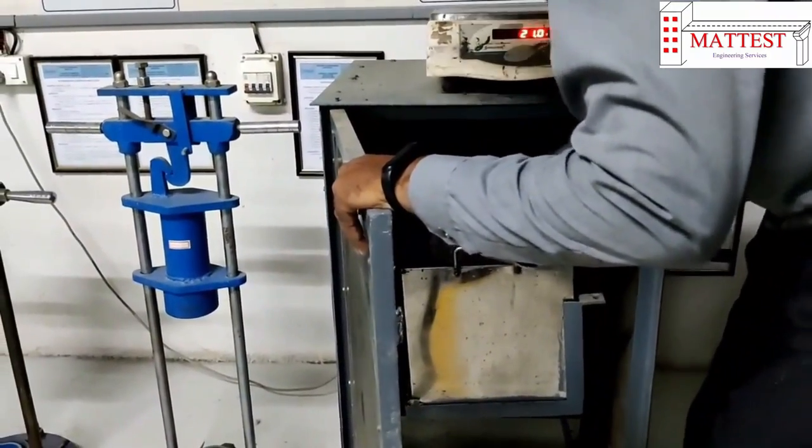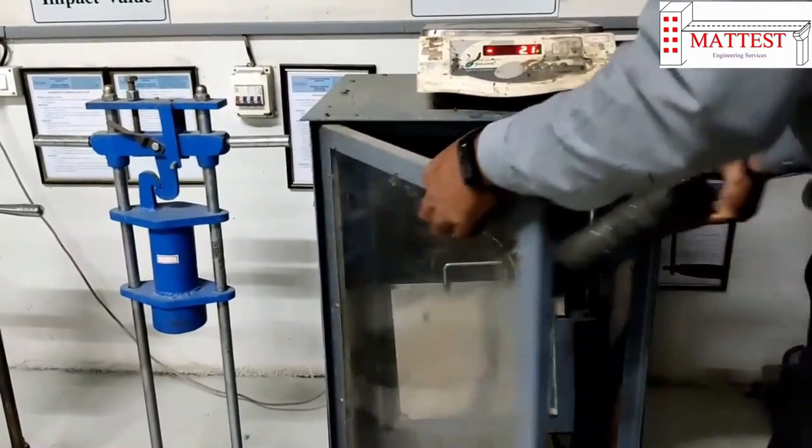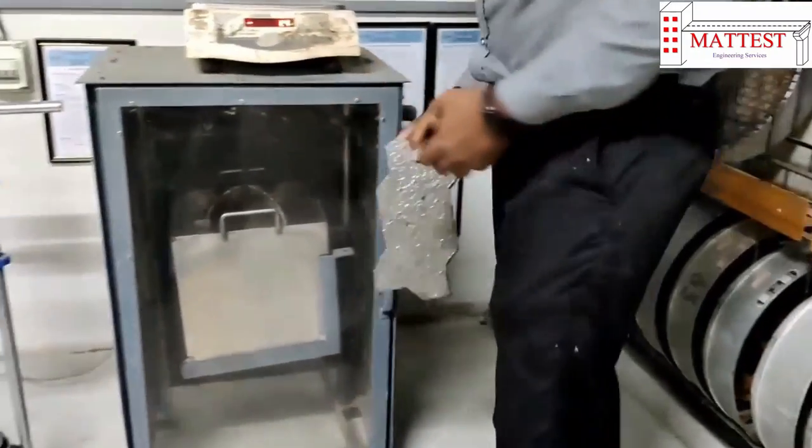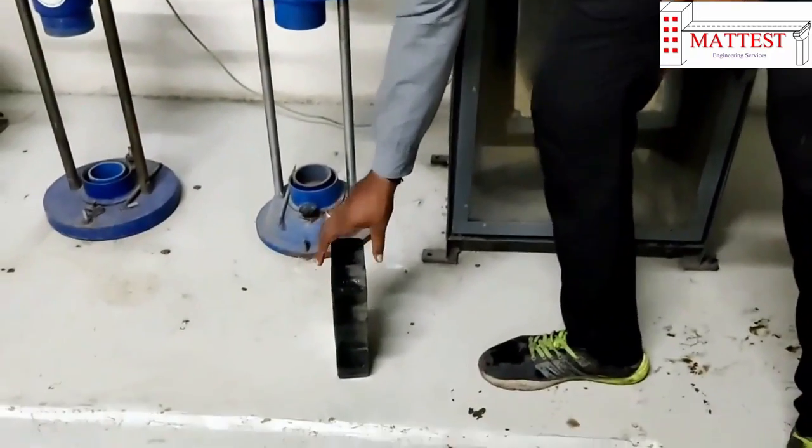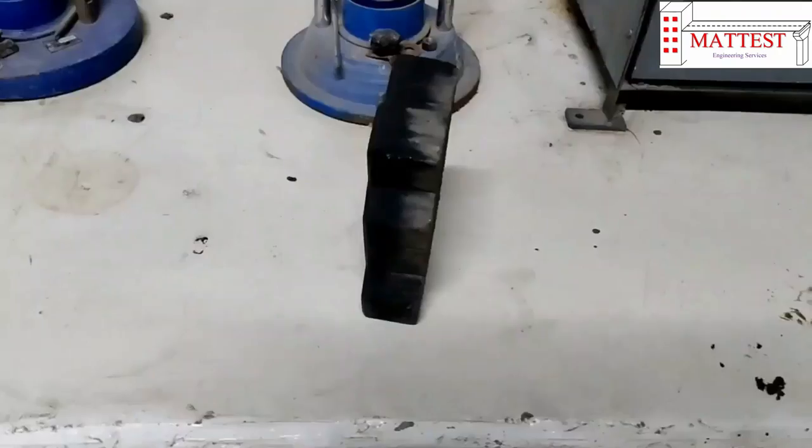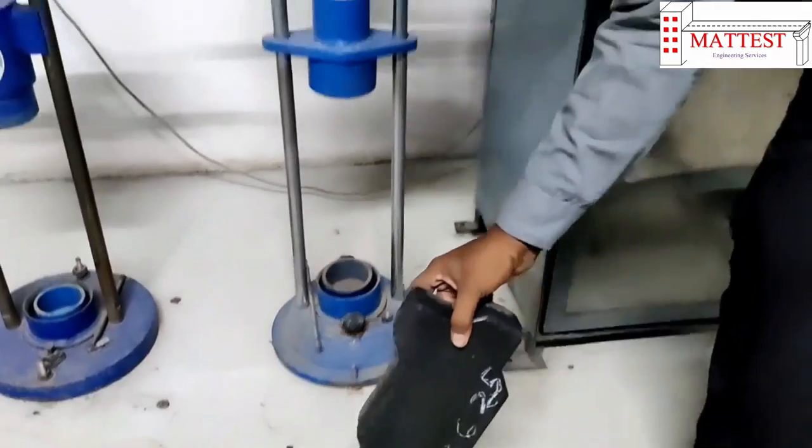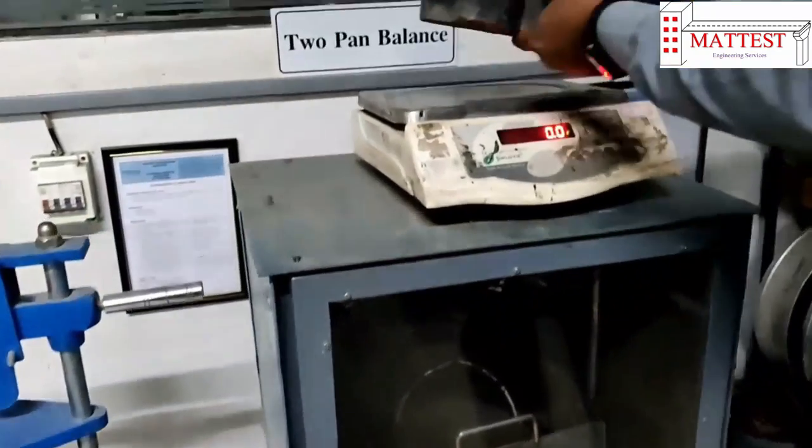Now the specimen is removed from the water and allowed to drain for one minute. Visible water on the specimen shall be removed with a damp cloth. Now the specimen is immediately weighed.